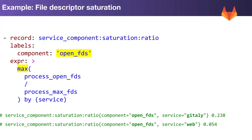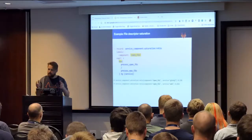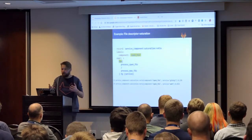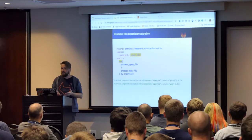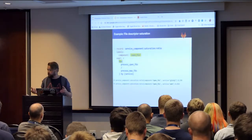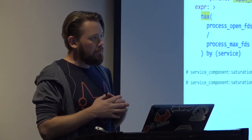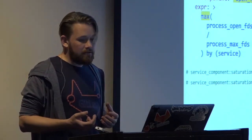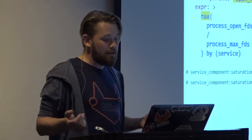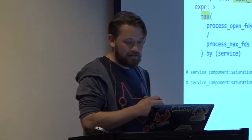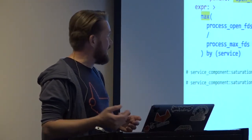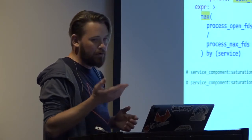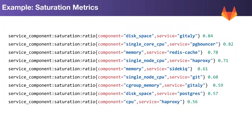Here's another example: recording open file descriptors. On a Unix machine, you have a maximum number of file descriptors a process can open. In Prometheus, if you use the Prometheus client for Go or Ruby, it will automatically emit this metric — you don't have to do anything. It's super easy to track. When you have a file descriptor leak it causes loads of problems, so rolling this out is a no-brainer. The output of this recording rule is a value between 0 and 1 as a ratio — 0 is good, 1 is bad.